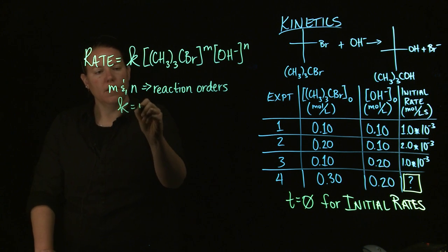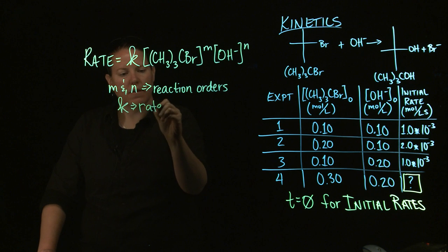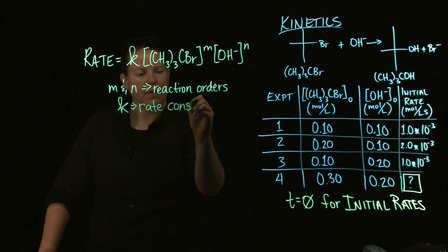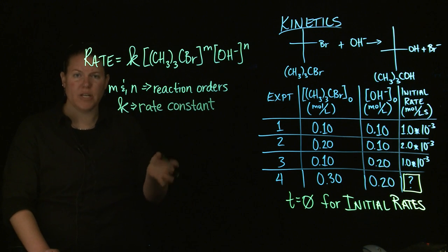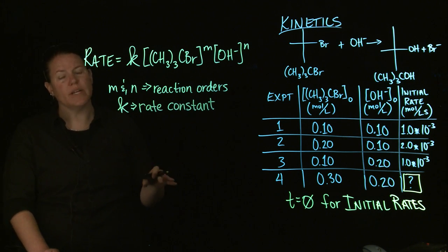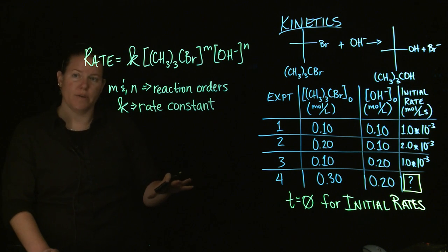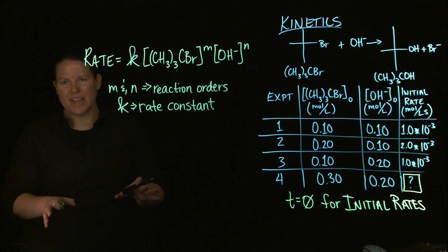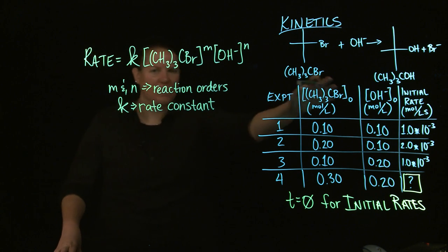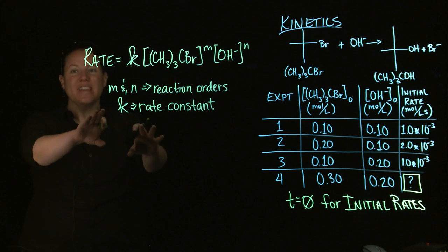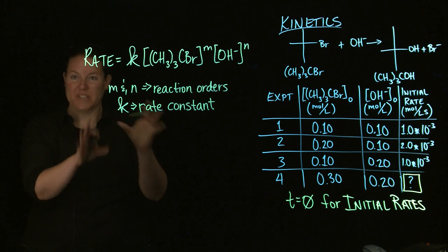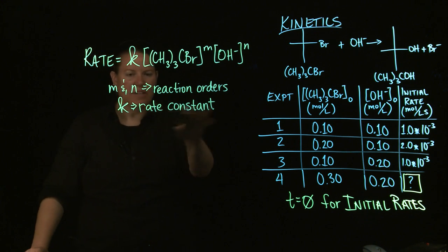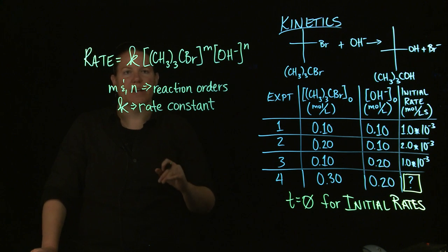K is what we call the rate constant. The rate constant is a constant — it only changes at different temperatures. When we're finding K, we're doing it at one temperature, and we can find it from a chart like this. When we're doing something with different temperatures and K, we're usually finding an activation energy, which we'll talk about in a future video. But at the moment, what we need is the rate constant.